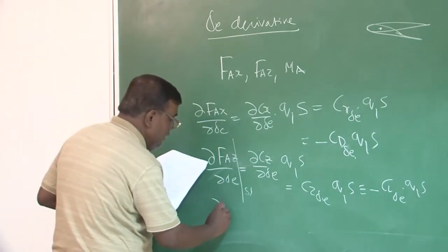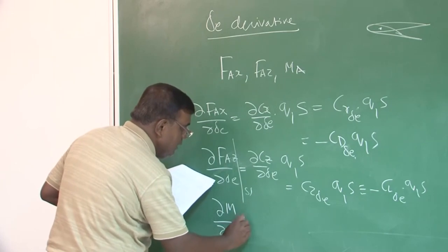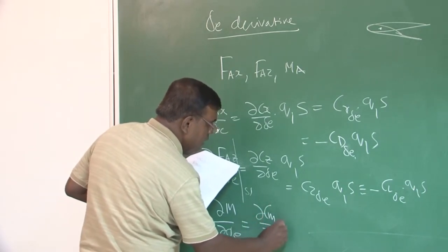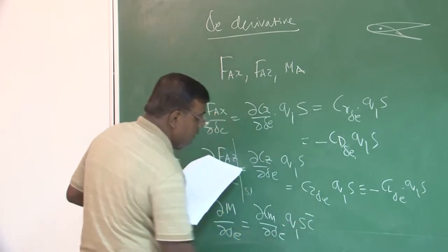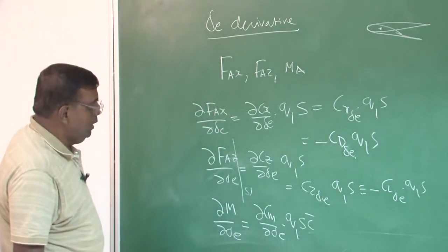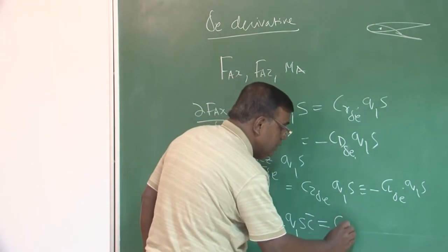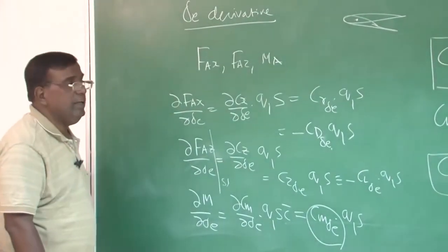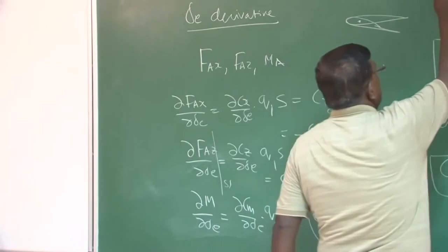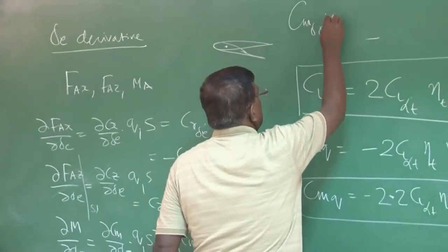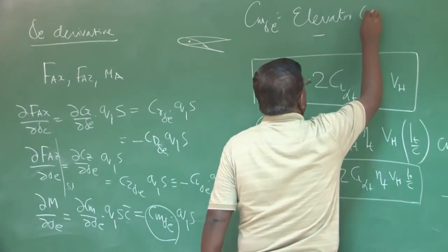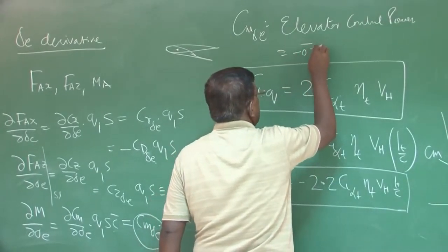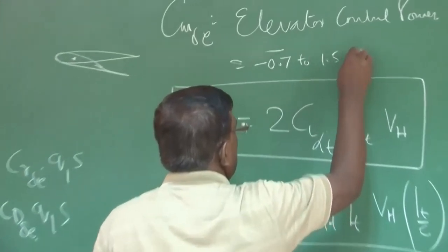Similarly, if I write DM by D delta E, this will be DCM by D delta E into Q1 S C bar. And this is very popular, very strong derivative CM delta E Q1 S. And what is CM delta E? You know, it is a elevator control power, ok. And we have already derived those expression in last module with the elevator control power. And typical value is minus 0.7 to 1.5 per radian.